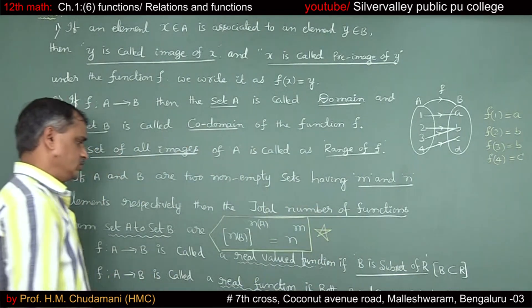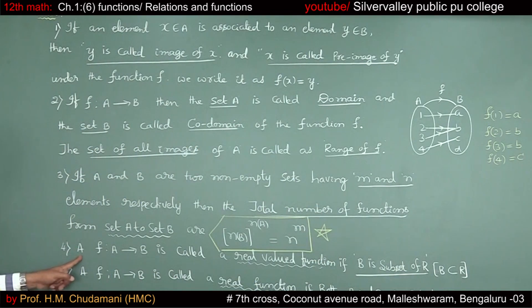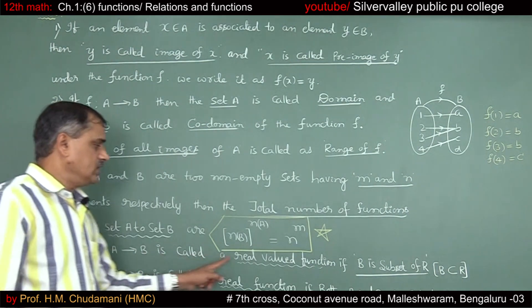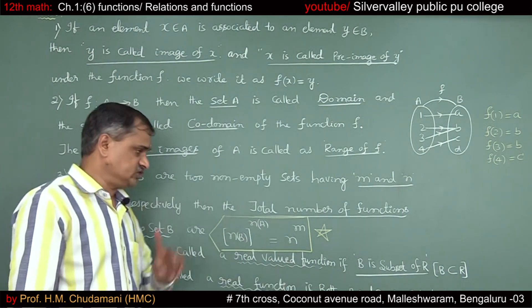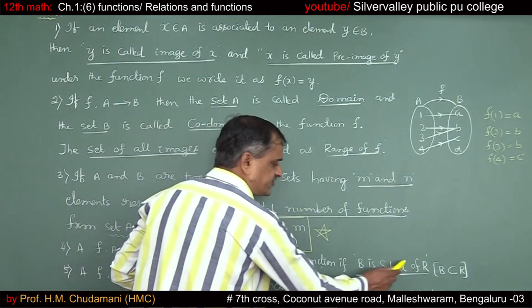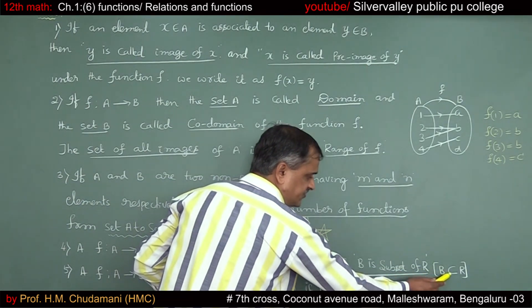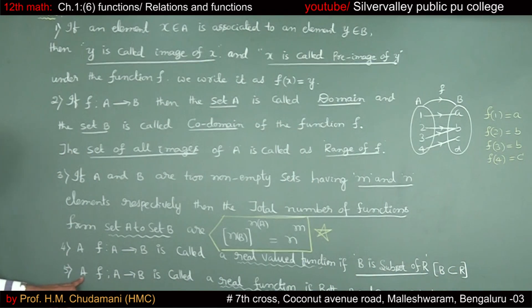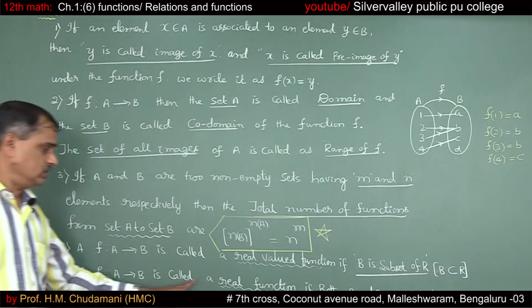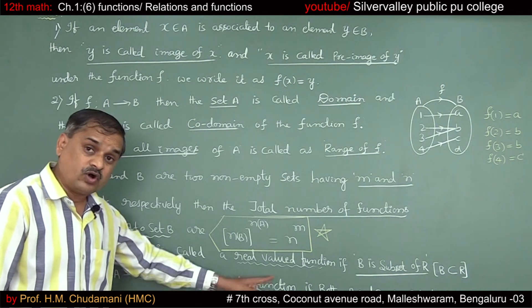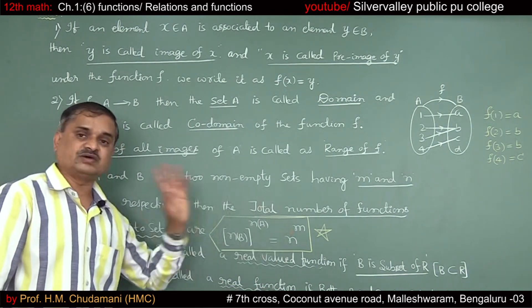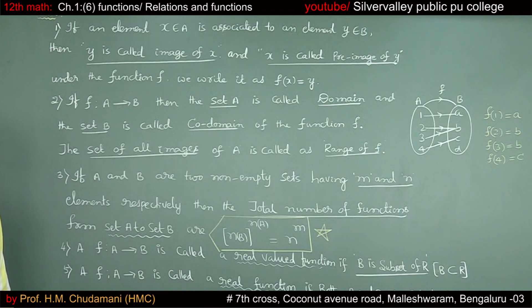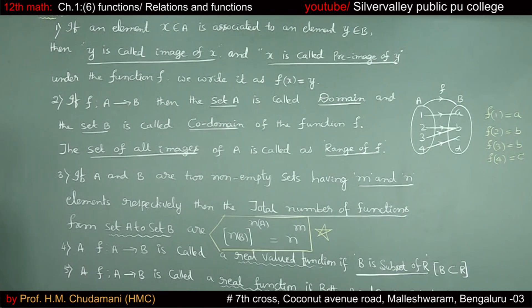An important note — Note 4: A function F from A to B is called a real-valued function if B is a subset of the real numbers. Note 5: A function F from A to B is called a real function if both A and B are subsets of the real numbers R.